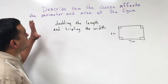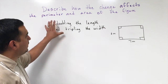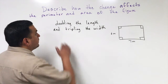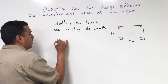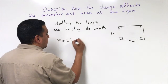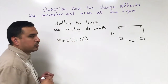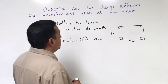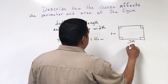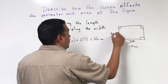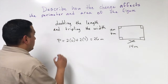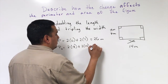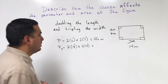Now we're going to look at what happens with the perimeter and area if I change more than one dimension. I'm looking at doubling the length and tripling the width. The perimeter of this rectangle is going to be 2 times 6 plus 2 times 7, which is 26 meters. If I double the length, my new length is going to be 14 meters, and if I triple the width, that's going to be 18 meters. So my new perimeter is 2 times 18 plus 2 times 14, which is 64 meters.